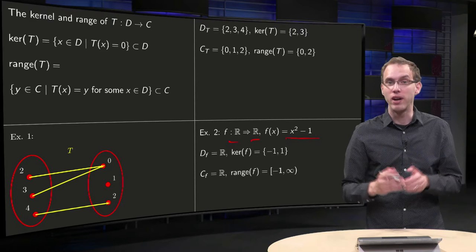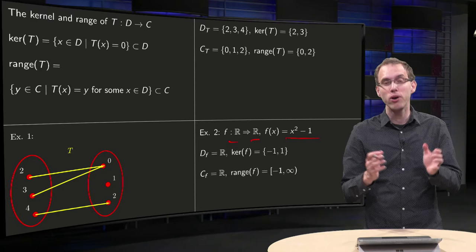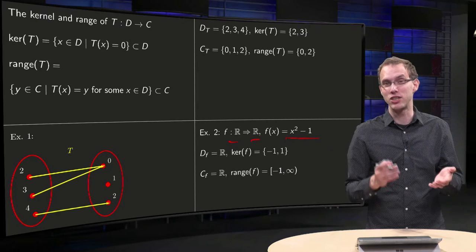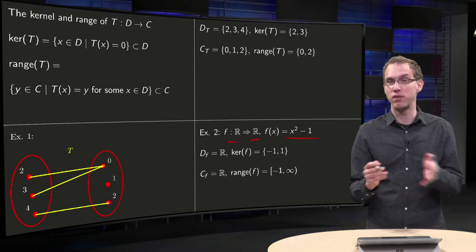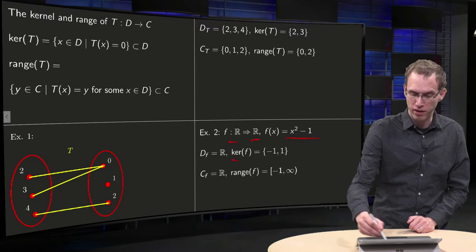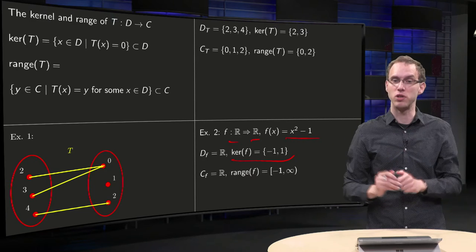Determining kernel and range is usually a bit more difficult. Kernel is a set of all values which are mapped to 0, so you are looking for x's such that x squared minus 1 equals 0. You can solve that equation, you get x equals minus 1 and x equals 1. So the kernel of f consists of two points minus 1 and 1, because those two are mapped to 0.